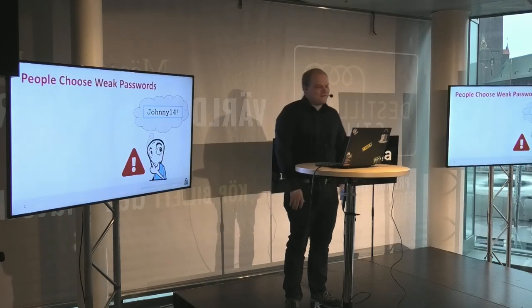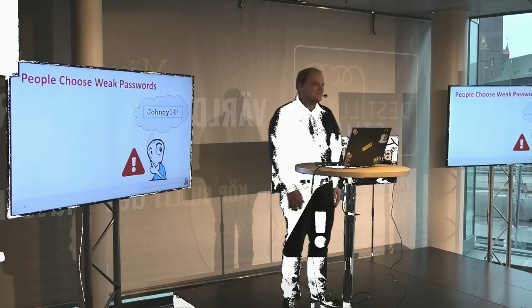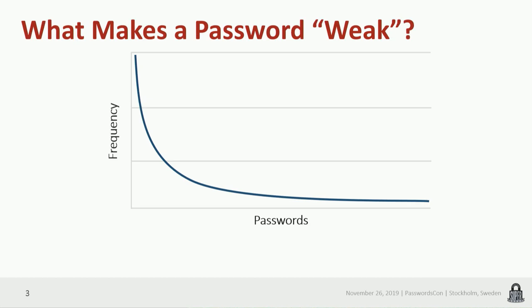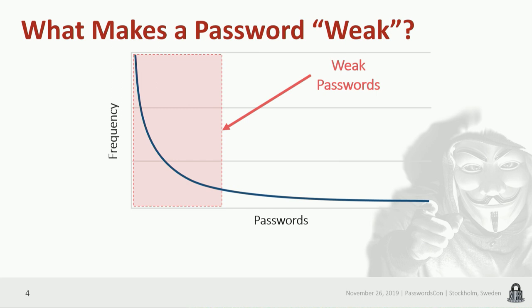Everyone here knows that sometimes people choose weak passwords. You might ask what makes a password weak, and there's something called a selection bias. A selection bias means that passwords are not uniformly distributed — instead they are somewhat shifted and there are more frequent passwords. It simply means that some passwords are more popular than others. Attackers are aware of this, and what they do is guess the most common passwords first. So they adapt their guessing strategy.